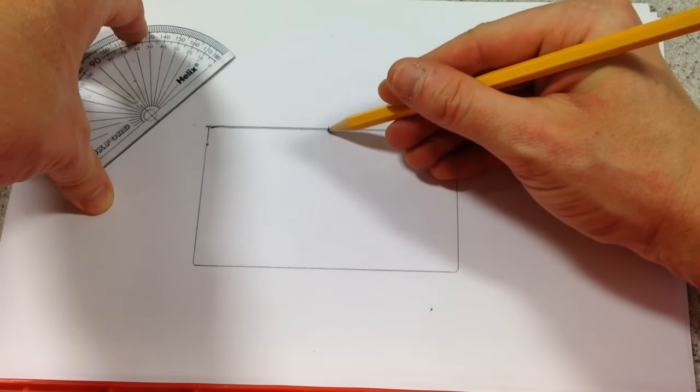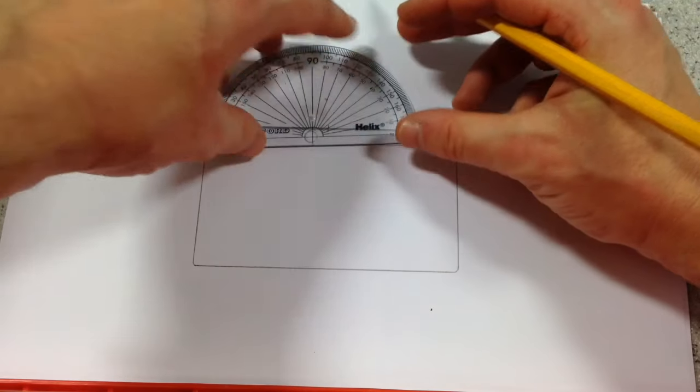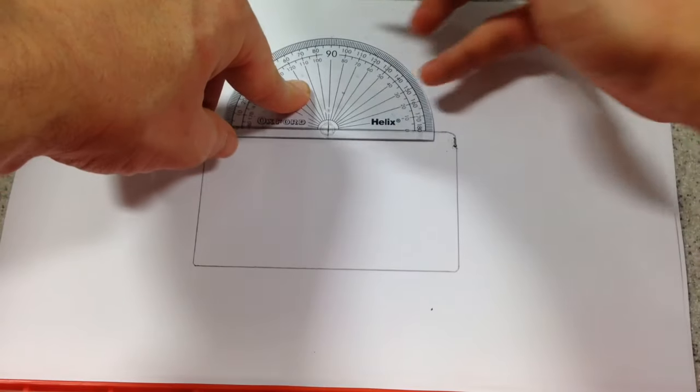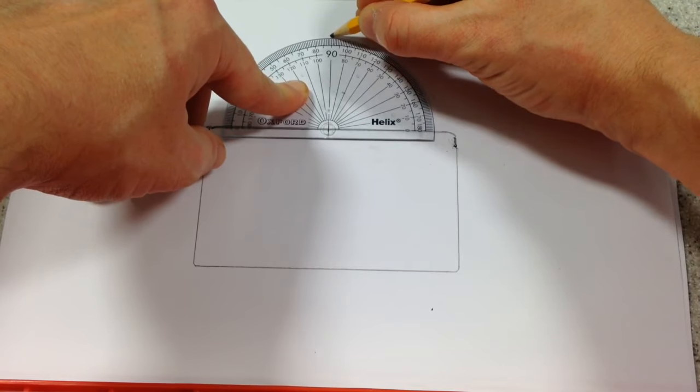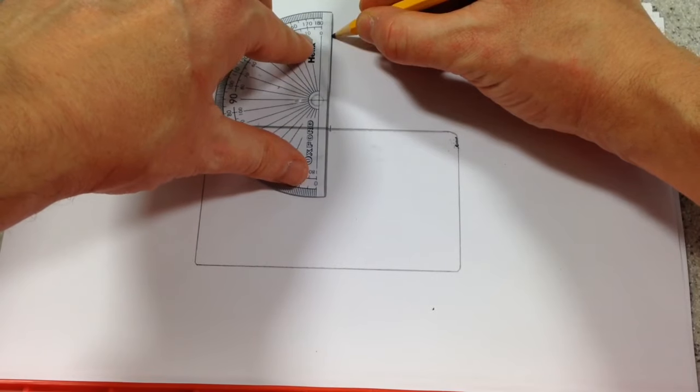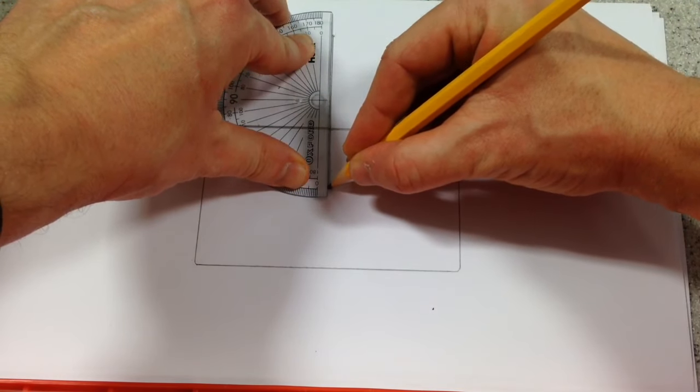Step two, mark a point approximately halfway along the longer side of the glass block and then you're going to use a protractor to mark a point that is 90 degrees from there, from the edge of the block. And we're going to draw in a line, it's called the normal line.